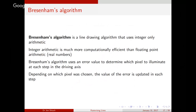The reason Bresenham's algorithm is so good is it uses integer-only arithmetic, so we're only dealing with whole numbers. It's able to decide which pixels are illuminated using only integer numbers, which is much more computationally efficient. It does this using an error value — the distance between the pixel centre and your idealised line. At each step along the driving axis, we have a choice between two pixels, and we choose whichever has the smallest error.